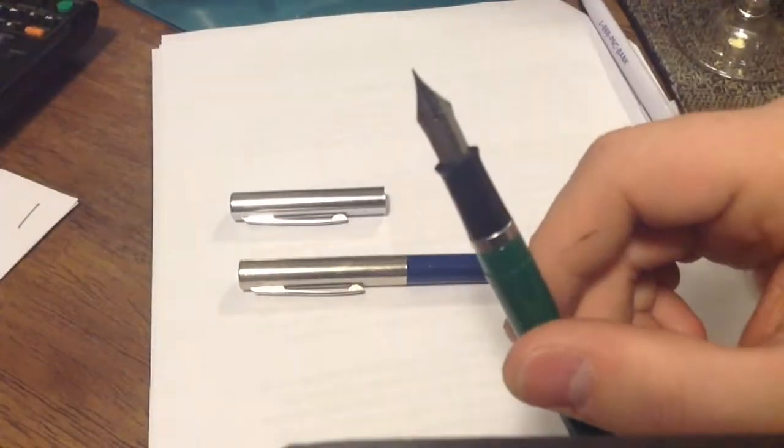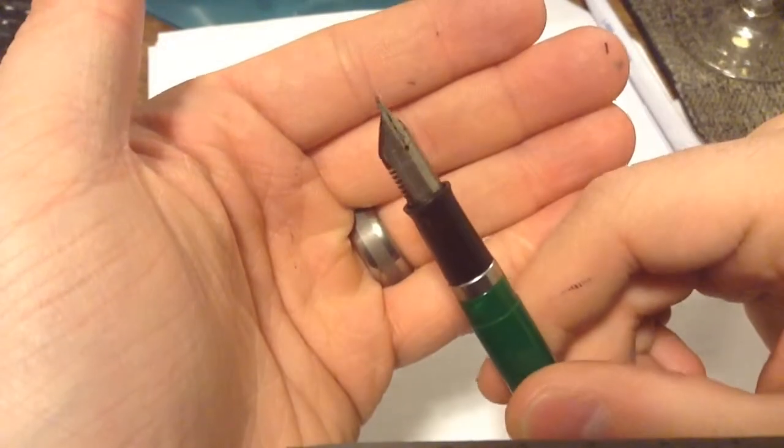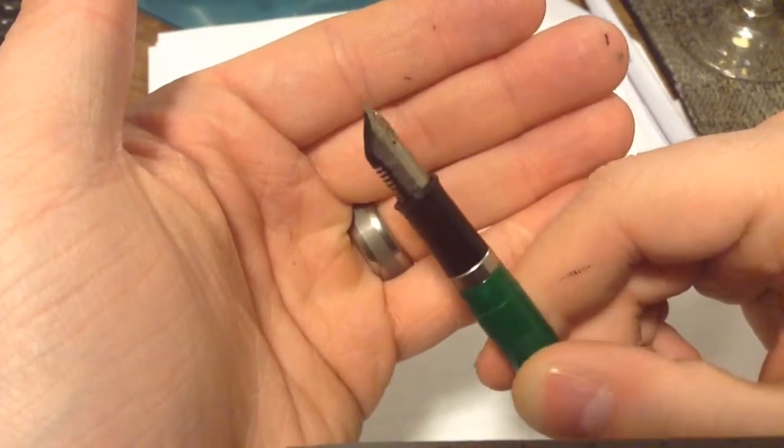And what a nib is, that silver end, or that silver piece on the end right there is called a nib.